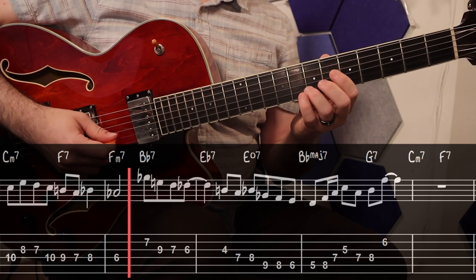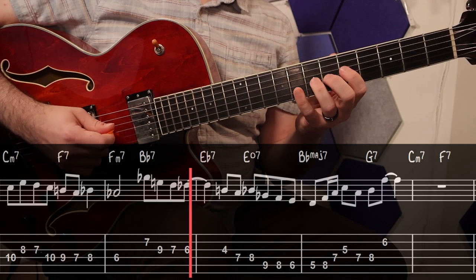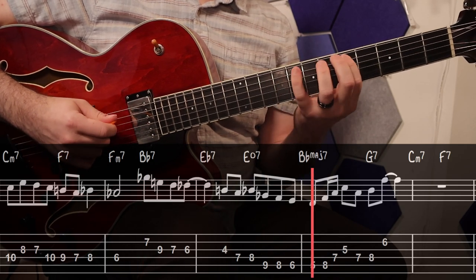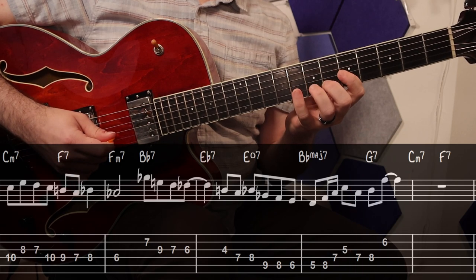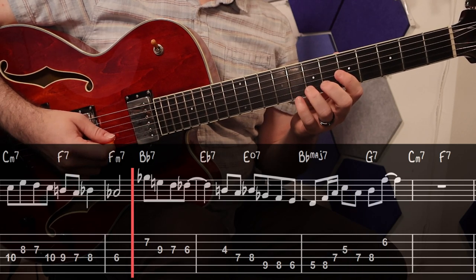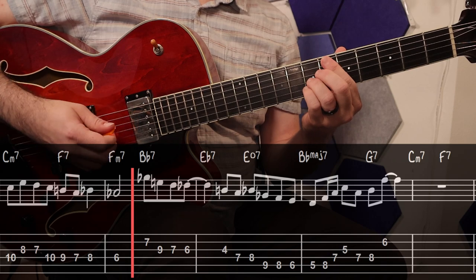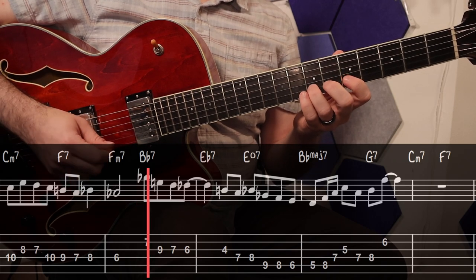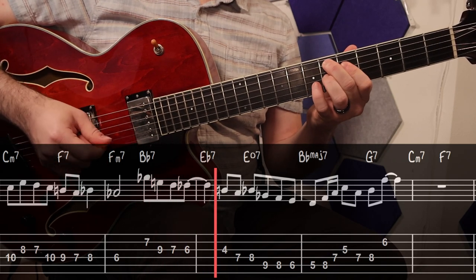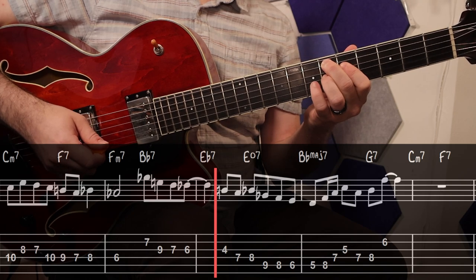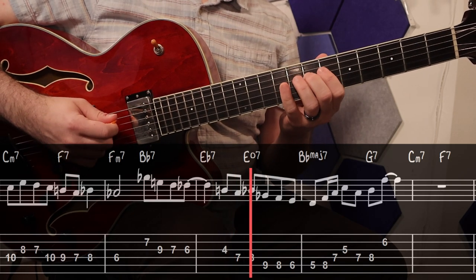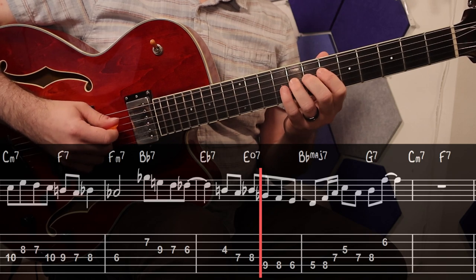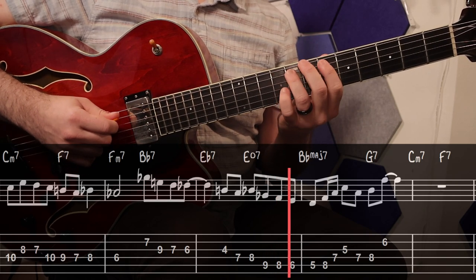Then he finishes up the A section like this. The beginning of it almost sounds kind of like a whole tone scale idea coming down from the flat 13th of Bb and then resolves by half step into the seventh of the Eb7. He surrounds the fifth of the Eb7 and then uses his favorite trick the Eb melodic minor scale to get into the third of the Bb.